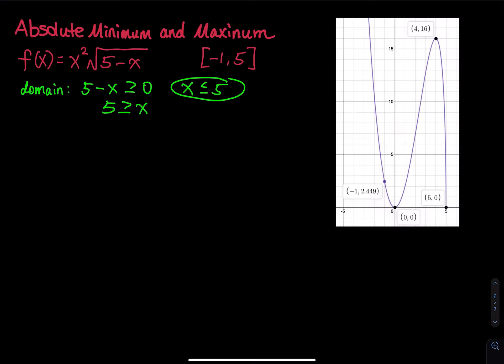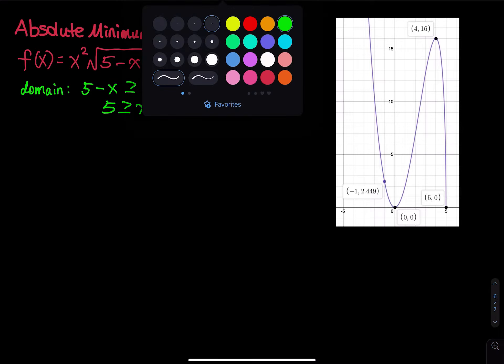The next step is to find the first derivative, set that equal to 0, and get the critical numbers. The reason for doing this is that other than the two endpoints, we might have relative minimum and maximum. If a point is a relative minimum, there is a chance that that point is also an absolute minimum. So let's find the derivative.